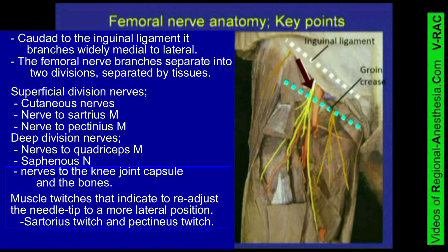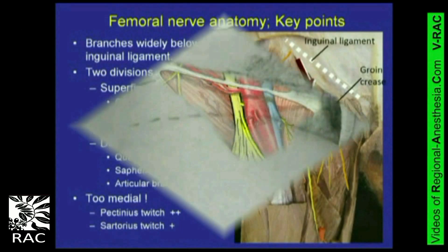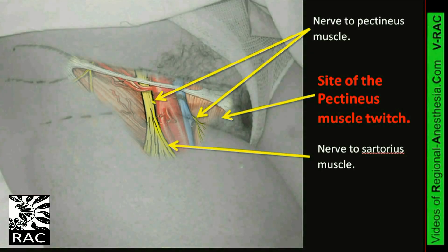A nerve block of the deep division alone will fail to anesthetize the skin over the anterior thigh and knee, while a nerve block of only the superficial division might fail to block the knee joint capsule and the quadriceps muscle division group of nerves.